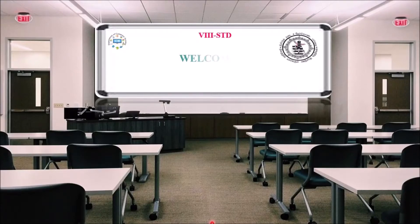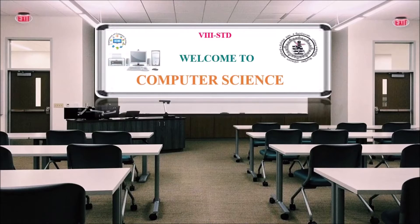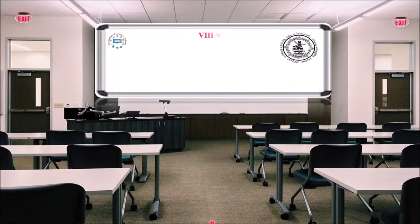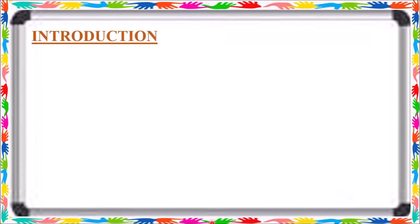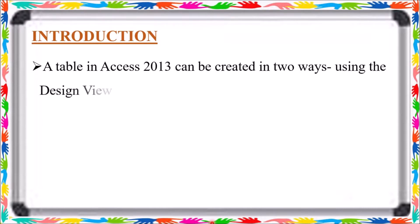Dear student, welcome to Computer Science class. Today we are going to discuss Chapter 6: Access 2013 Design View Introduction. A table in Access 2013 can be created in two ways. Using the Design View, we already discussed the last two chapters on Access table creation methods. The first method is Datasheet View. In this chapter, we will discuss creating a table in Design View.